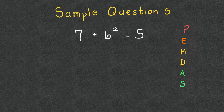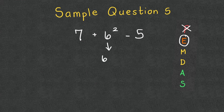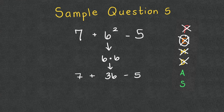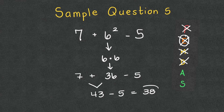Sample question five introduces exponents. No parentheses, but we have 6² — six squared means 6 × 6. We use a dot instead of an x for multiplication to avoid confusion with variables in algebra. 6 × 6 = 36. Now we have 7 + 36 − 5. Addition and subtraction left to right: 7 + 36 = 43, then 43 − 5 = 38. The answer is 38.